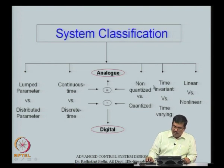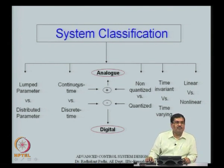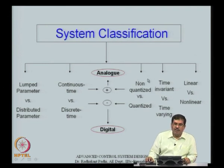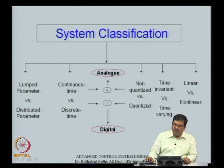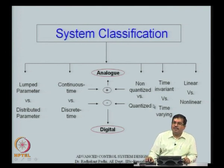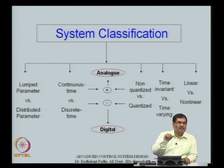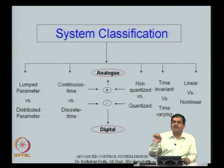Systems can also be classified as continuous time versus discrete time, depending on whether time evolves continuously or in discrete jumps from one value to another. Similarly, the dependent variable can be non-quantized or quantized — for example, a digital watch where both time and the pointer position jump discretely is a quantized description of the system.